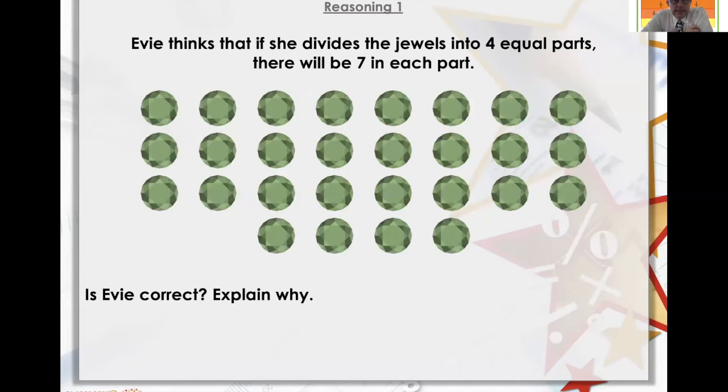So Evie thinks that if she divides the jewels into four parts, there will be seven in each part. Well, let's have a look. How many of you all together? One, two, three, four, five, six, seven, eight, nine, ten, eleven, twelve, thirteen, fourteen, fifteen, sixteen, seventeen, eighteen, nineteen, twenty, twenty-one, twenty-two, twenty-three, twenty-four, twenty-five, twenty-six, twenty-seven, twenty-eight.